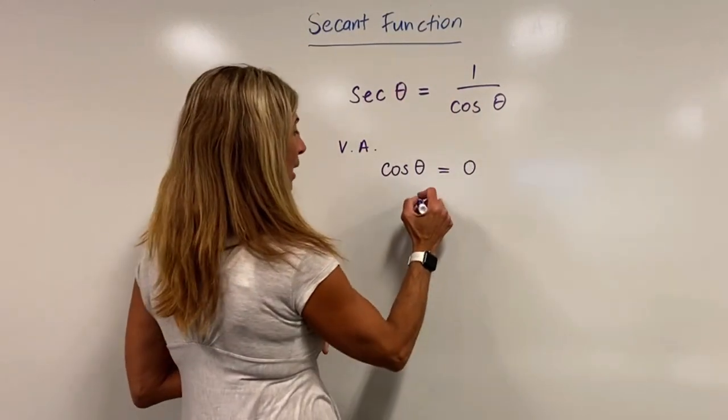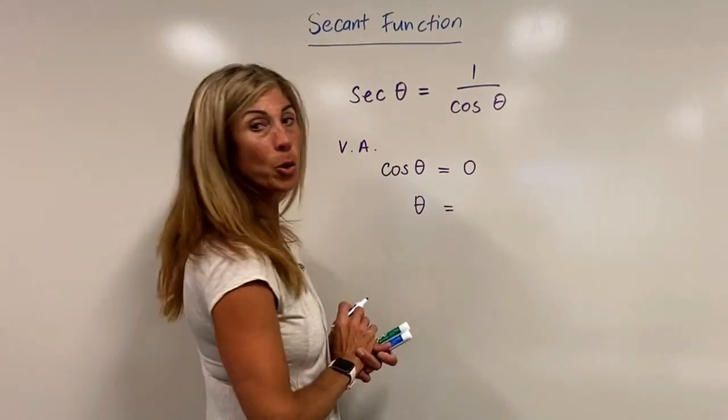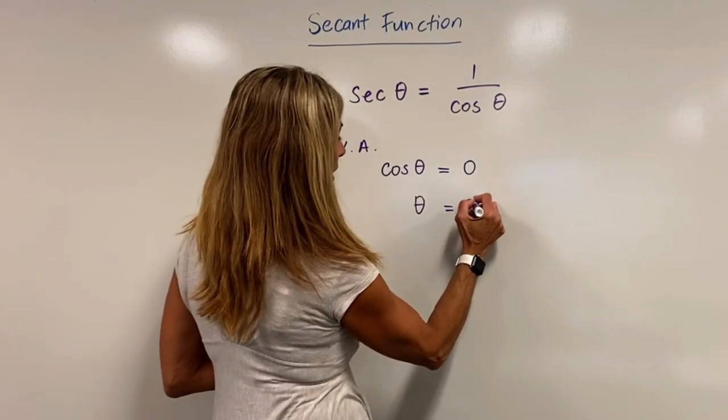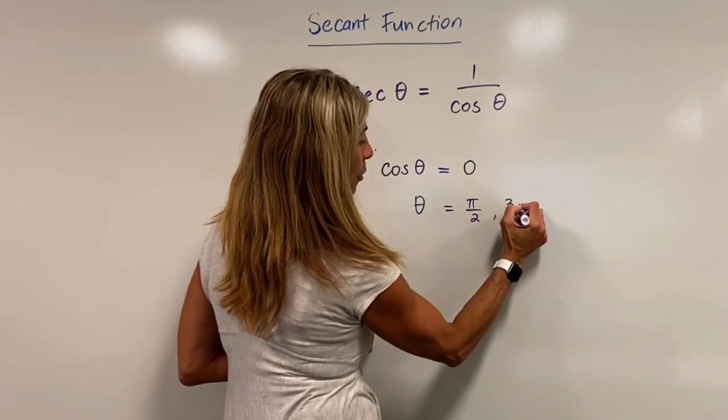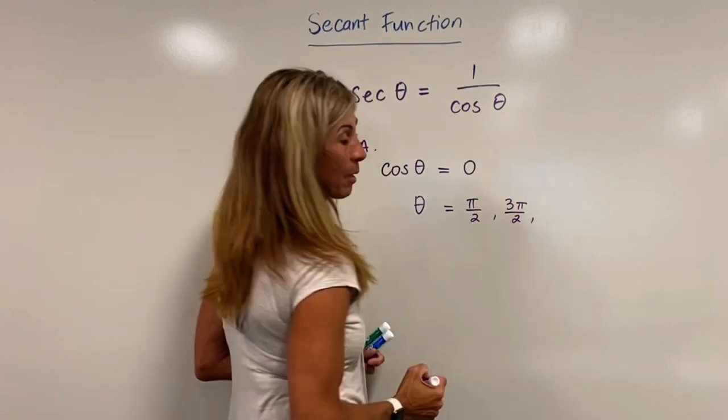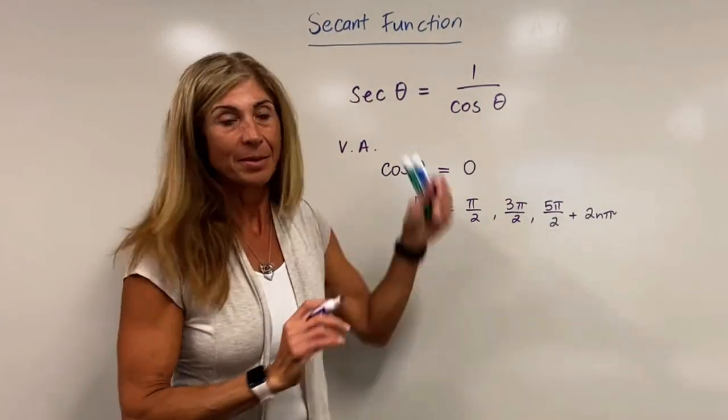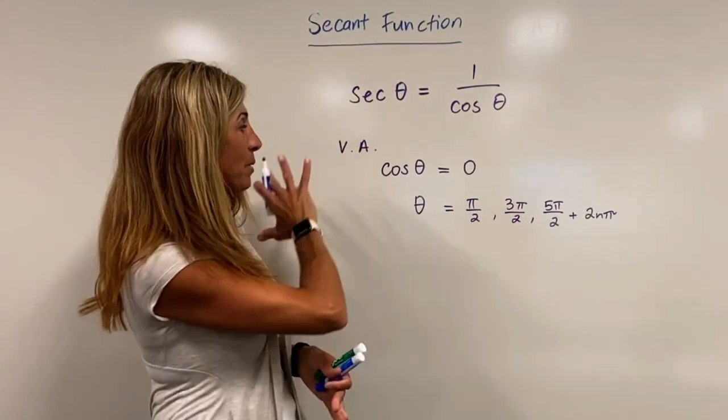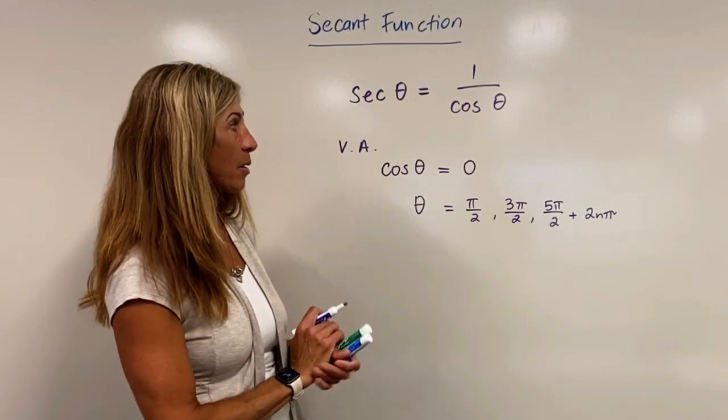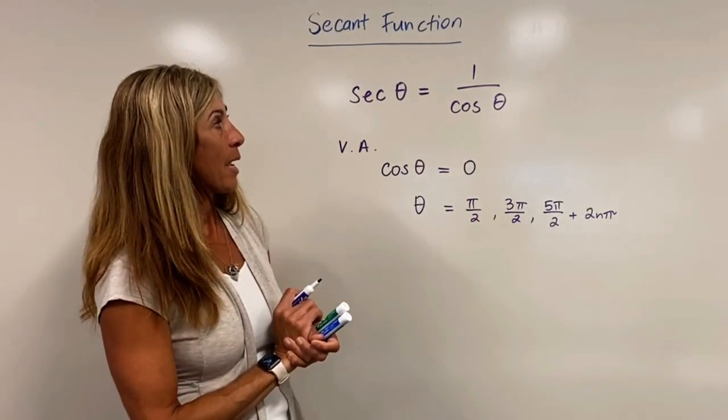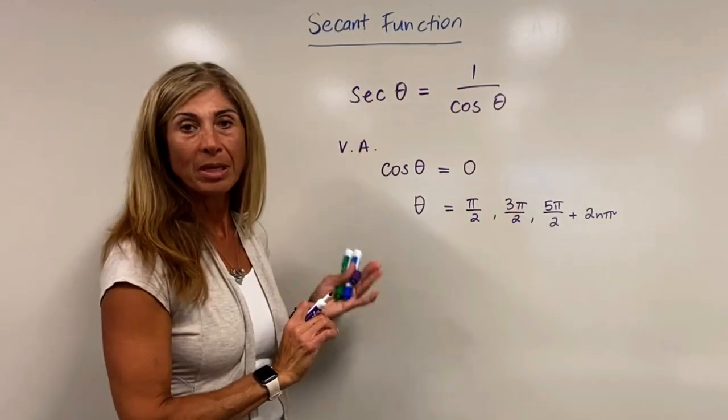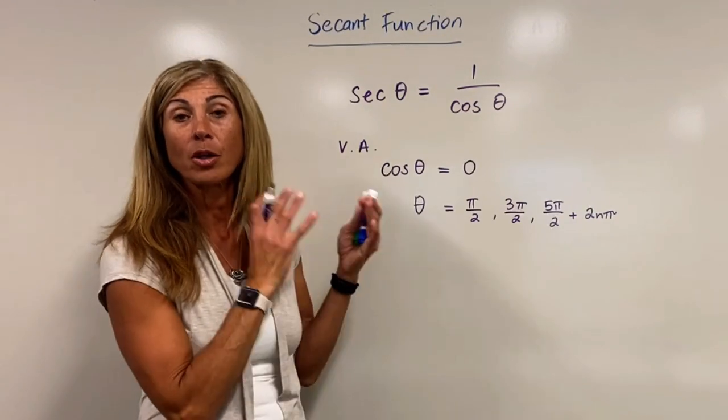And we know from our past that cosine theta equals 0 at pi over 2, 3 pi over 2, in fact, any 2 pi plus pi over 2. So we happen to have our vertical asymptotes there. Recall that. And that is one of the properties of our reciprocal of cosine theta.